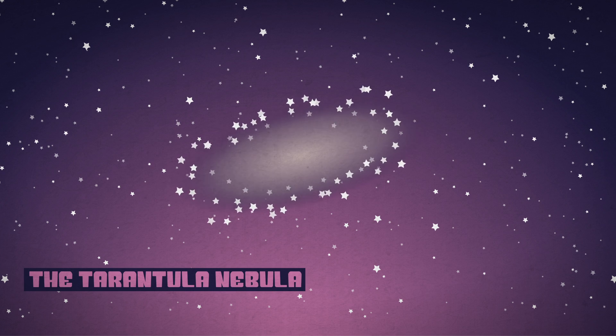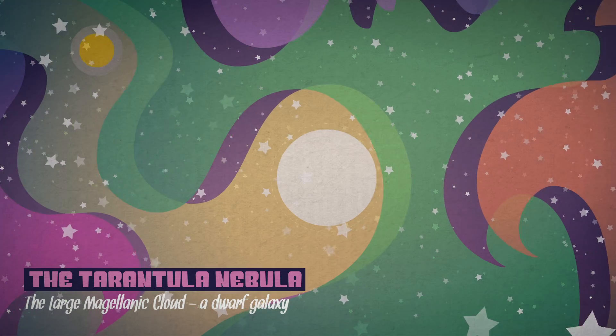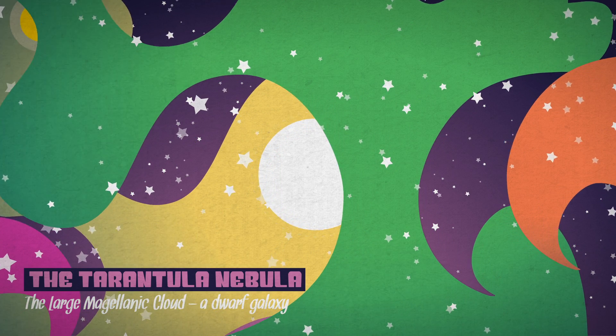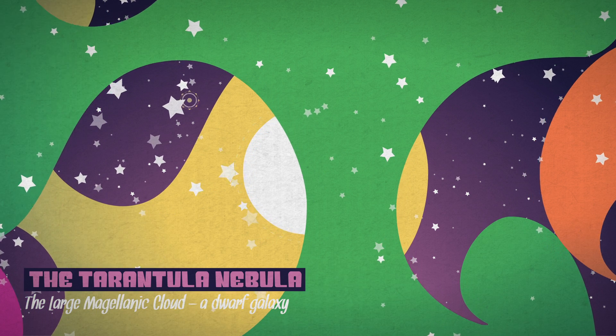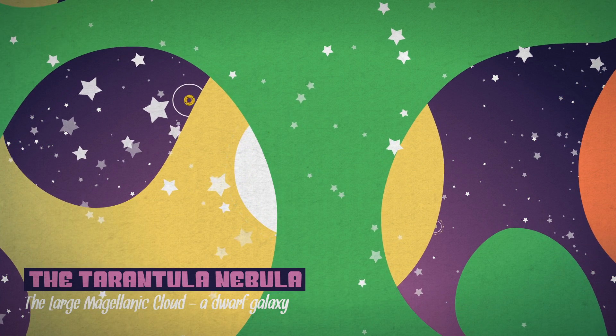The last supernova that sent detectable neutrinos to Earth was in 1987, on the edge of the Tarantula Nebula in the Large Magellanic Cloud, a nearby galaxy. Its neutrinos reached Earth about three hours ahead of the visible light.